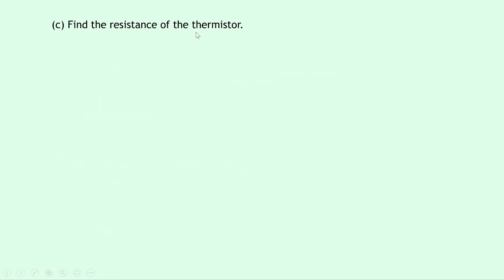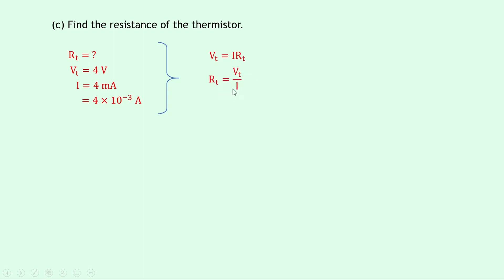Part C says to find the resistance of the thermistor. We're trying to find R_T. We know the voltage across the thermistor is 4 volts and the current is 4 milliamps, which is 4×10⁻³ amps. Using V_T = IR_T and rearranging, R_T = V_T / I. Substituting in gives 4 divided by 4×10⁻³, which gives a final answer of 1×10³ ohms.